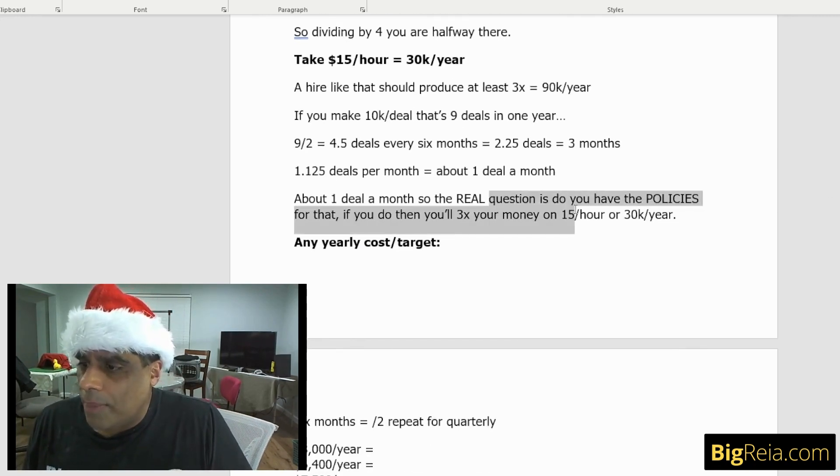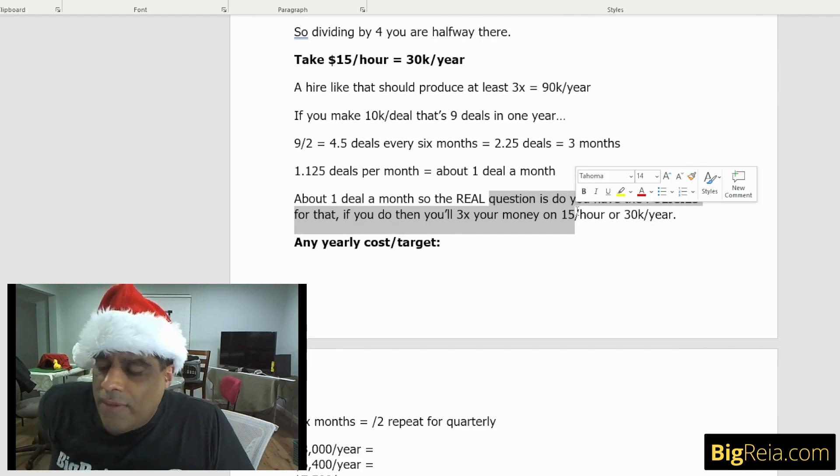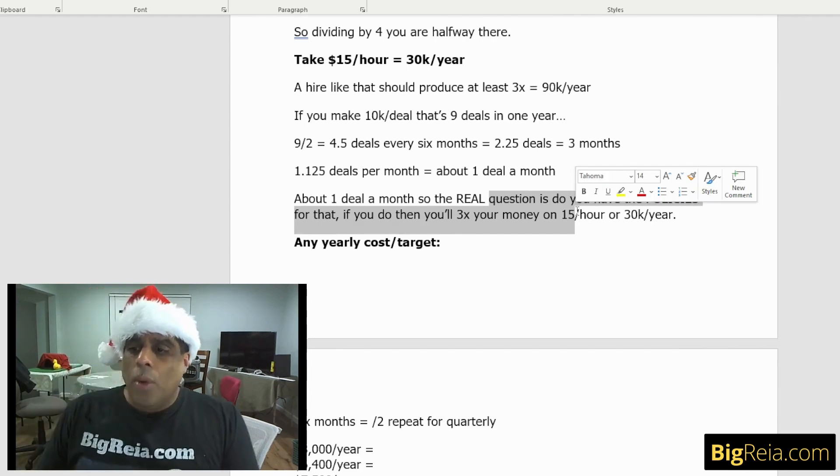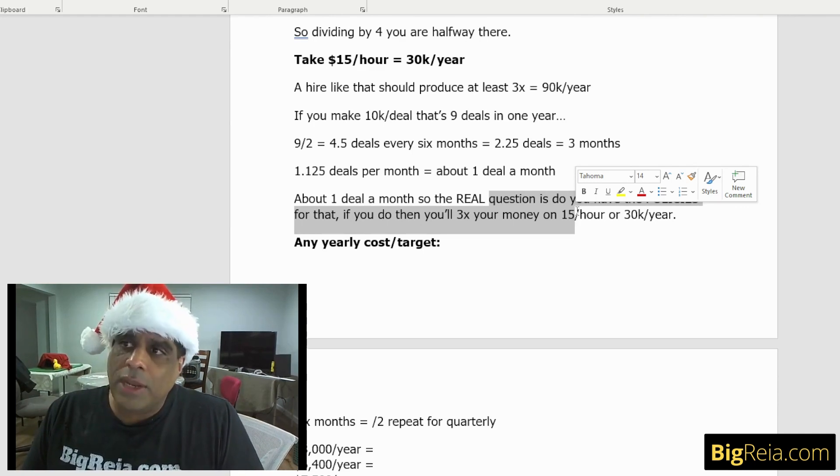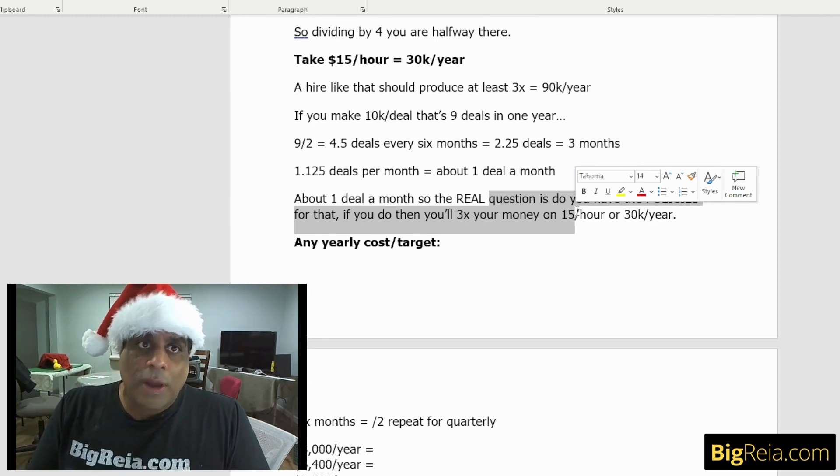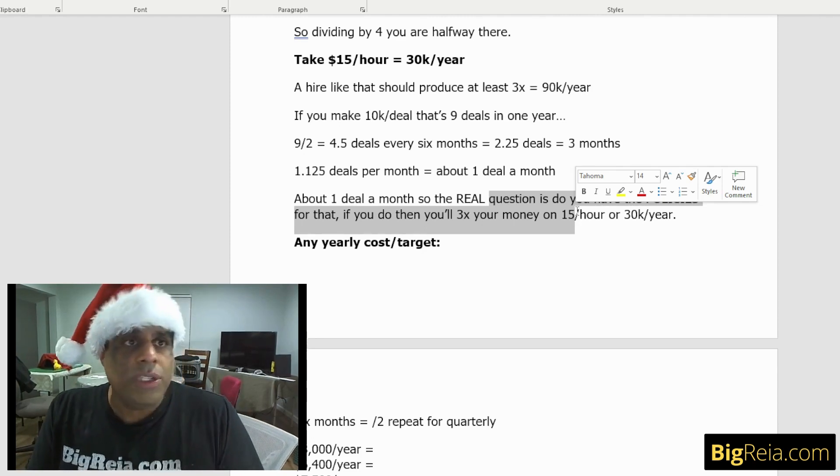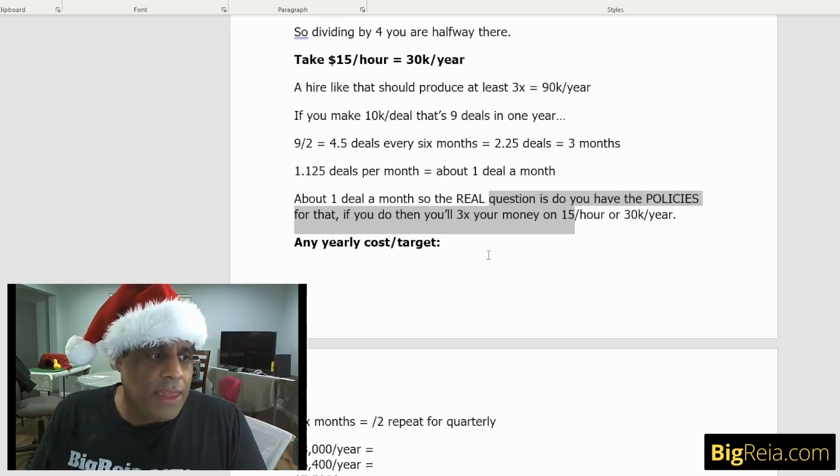So the real question is, do you have the policies for that? If you don't have the policies for someone to come on your team working full time at $15 an hour, they should be able to put together at least one deal a month. The biggest reason people don't scale or hire people effectively is because they don't know how to hire them. They don't have the policies, the checklists, the scripts, the drawings. They don't know exactly what to have them do. Once you do, it becomes really easy because of course you want to hire someone for $15 an hour because every dollar you pay them, they're making you three times that money back.